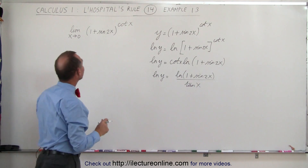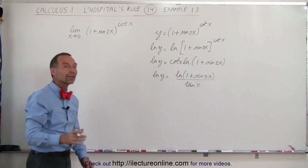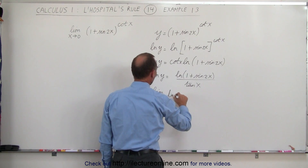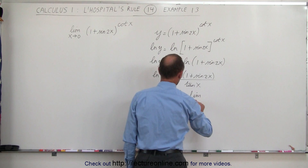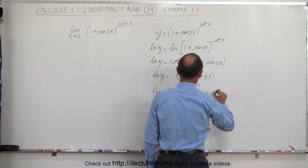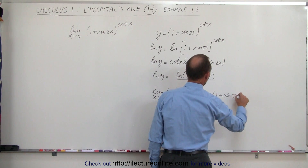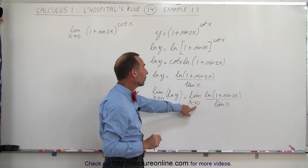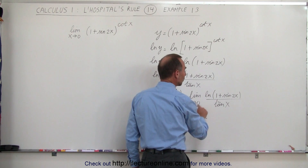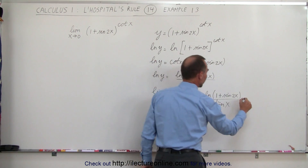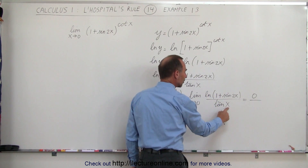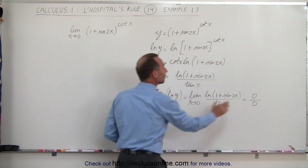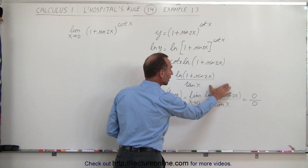Now we have ourselves a fraction. We can take the limit of the natural log of the function rather than the function itself. We say: the limit as x approaches 0 of the natural log of 1 plus sine of 2x, divided by the tangent of x. When we plug in the limit, the sine of 0 is 0, so the natural log of 1 is 0. And the tangent of 0 is also 0. We end up with a 0 over 0 condition, for which we can use L'Hôpital's rule — meaning we take the derivative of the numerator and the derivative of the denominator.